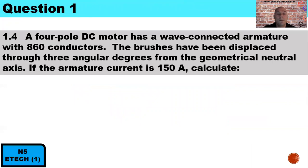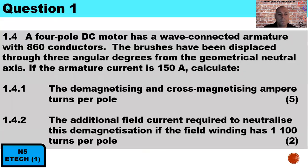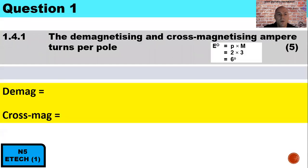Question 1.4: A four-pole DC motor has a wave-connected armature with 860 conductors. The brushes have been displaced through three mechanical degrees from the geometrical neutral axis. The armature current is 150 amps. Calculate the demagnetizing and cross-magnetizing ampere turns per pole, and the additional field current required to neutralize the demagnetization if the field windings have 1,100 turns per pole. First, we determine the electrical degrees: mechanical degrees of 3 multiplied by the pole pairs of 2 gives electrical degrees of 6.